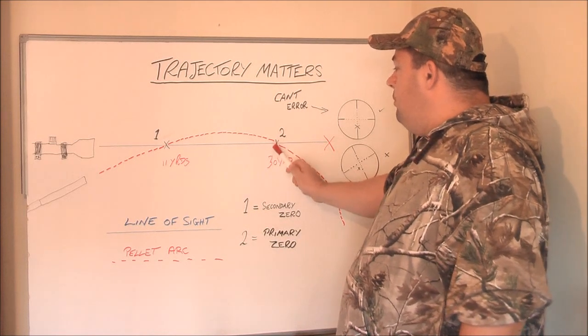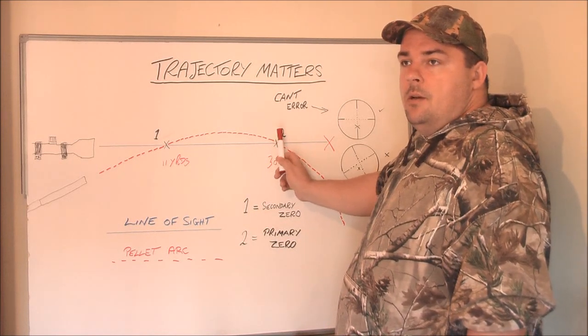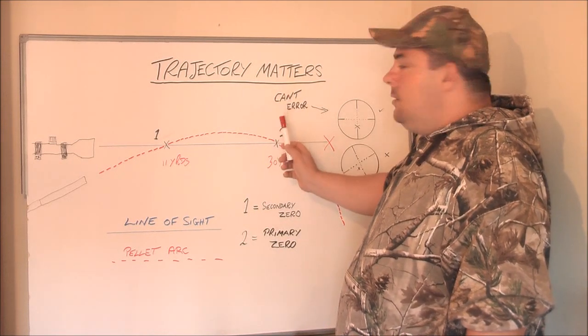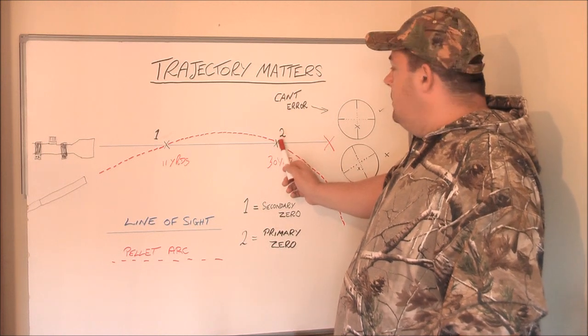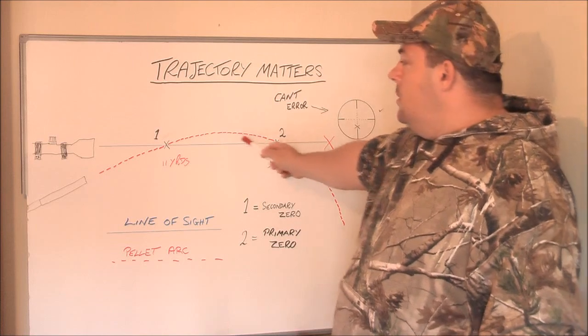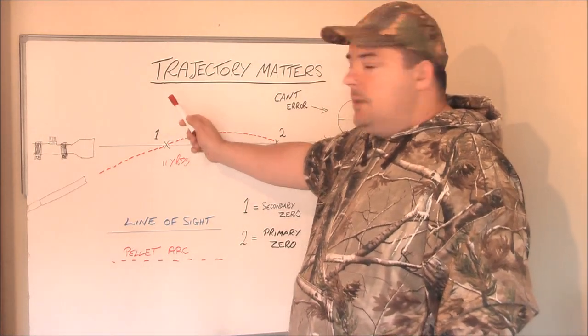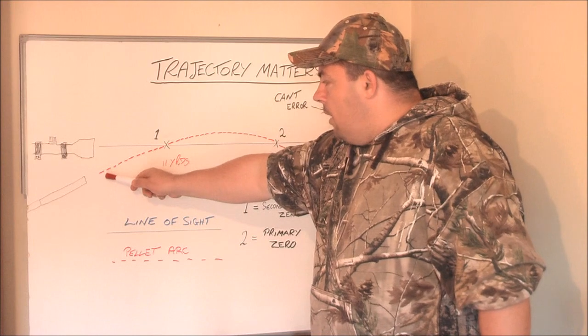11 yards are your secondary zero. Primary zero being this one because this is where your main intention, intended zero is. So this is your primary zero. Number 1 is your secondary zero.